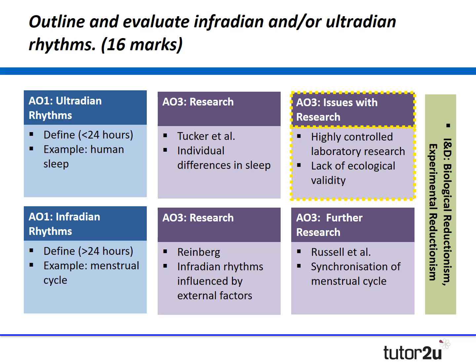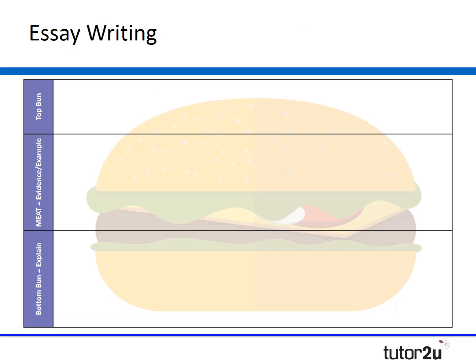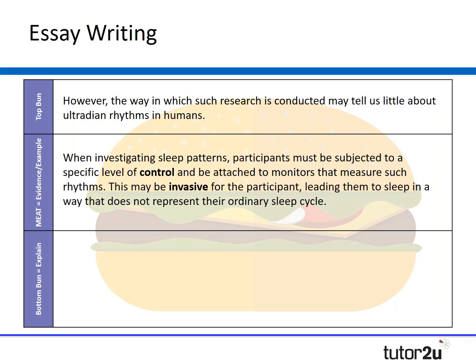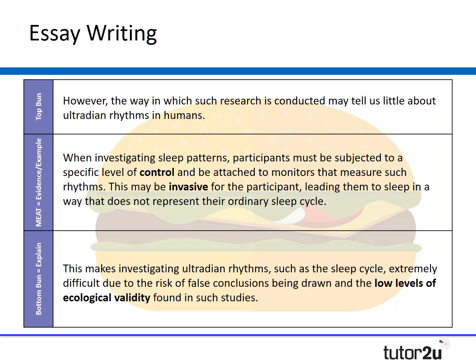I've kept it nice and simple for this essay. Let's consider the issues with the research as a completely separate paragraph. You might say: however, the way in which such research — for example Tucker — is conducted may tell us little about ultradian rhythms in humans. When investigating sleep patterns, participants must be subjected to specific levels of control and be attached to monitors that measure such rhythms. This may be invasive for the participant, leading them to sleep in a way that does not represent their ordinary sleep cycle. This therefore makes investigating ultradian rhythms extremely difficult due to the risk of false conclusions being drawn and the low levels of ecological validity found in such studies.